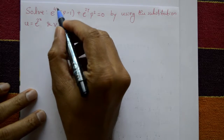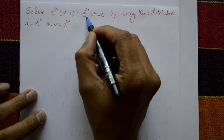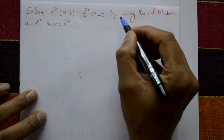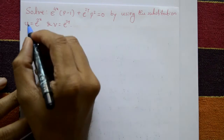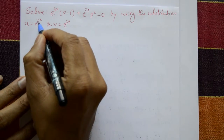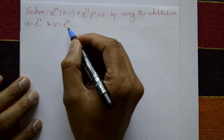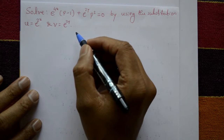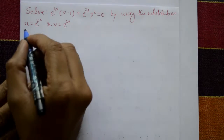Solve e raised to 4x into p minus 1 plus e raised to 2y into p square equal to 0, by using the substitution u equal to e raised to 2x and v equal to e raised to 2y. Find the general solution of the Clairaut equation.